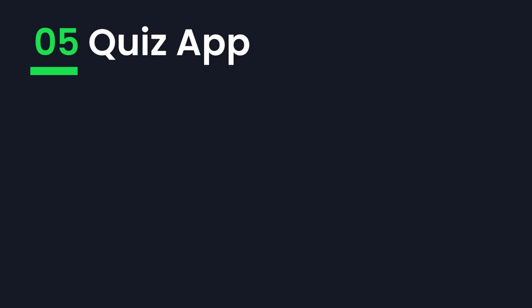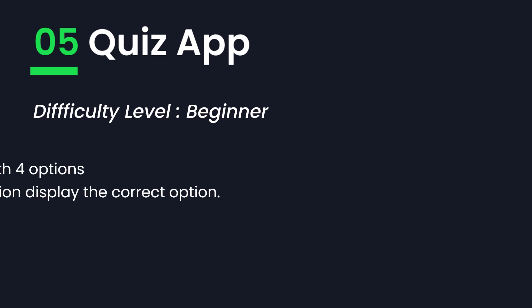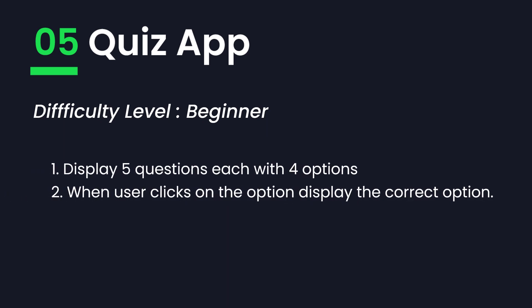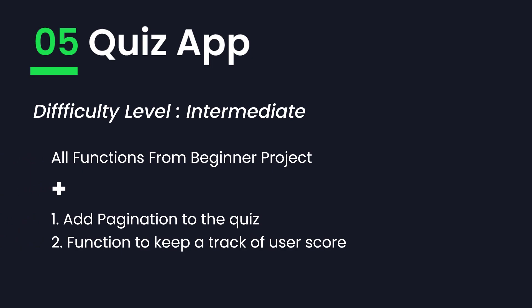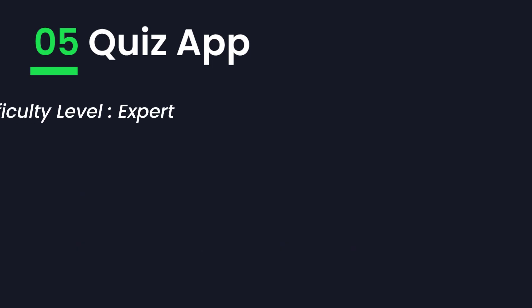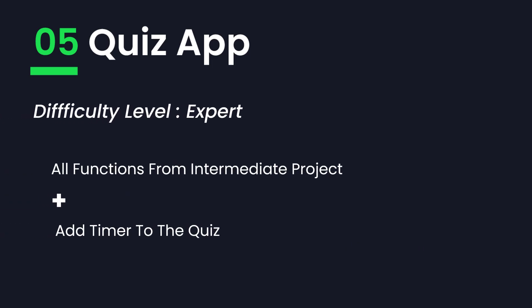The final project on today's list is the quiz app. The easiest version of this project includes displaying five questions, each with four options. You also have to implement logic to determine the correct answer when the user clicks on one of the options. In the intermediate version, you have to implement additional functions like pagination and tracking of user score. Finally, in the expert version, you have to implement a timer.